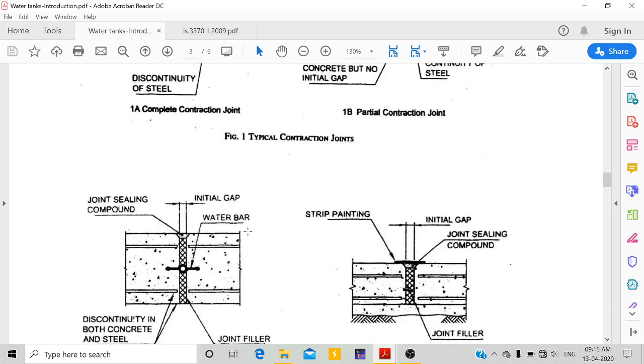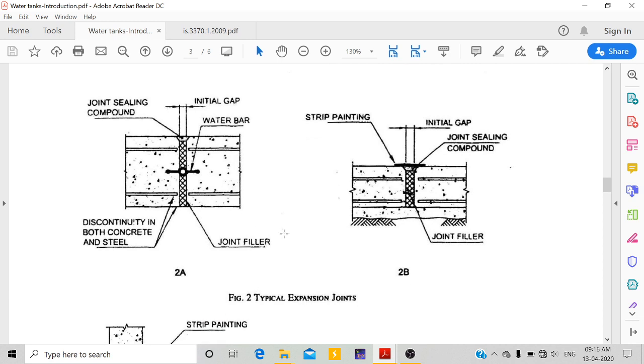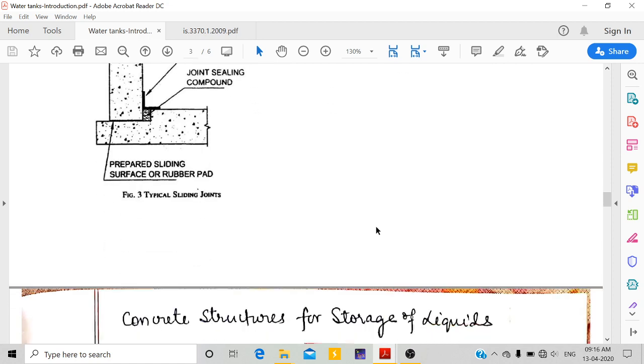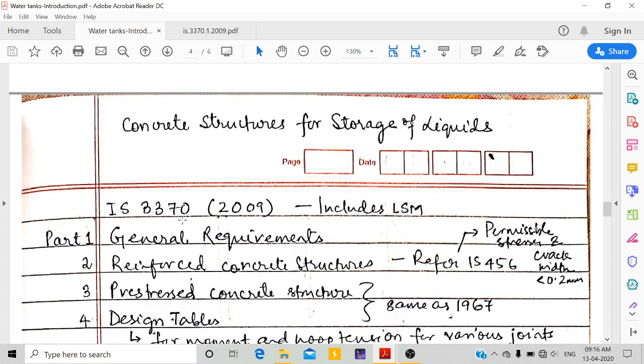These are different types of joints. There is continuity of steel, but here it is not continuous, so we have provided a water bar. Next is expansion joints. All these figures are given in IS 3370 part 1. You can also have temporary joints - initially you can have some gap, then fill it with sealants. This is for sliding joints if you want some flexible joints by having rubber pads.